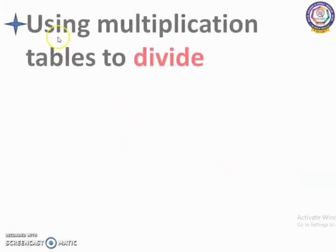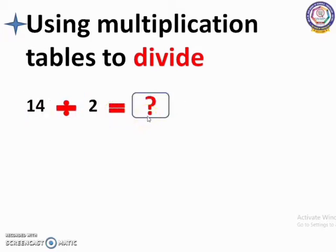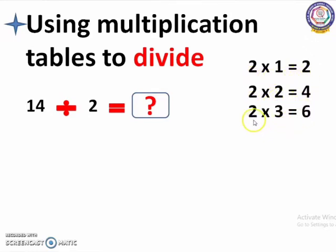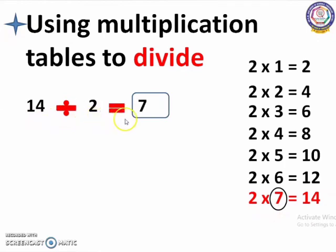Next, we are going to see using multiplication tables to divide. Here, we have 14 divided by 2 equals blank. To find the answer, we have to recall the 2 times table. Here, 7 times 2 is 14. So 14 divided by 2 is 7.